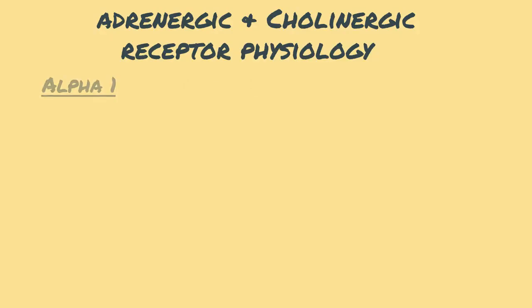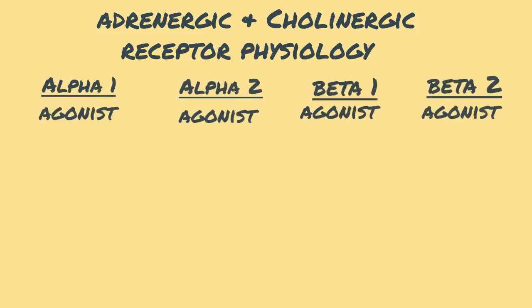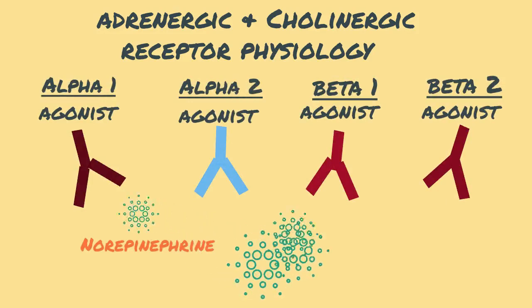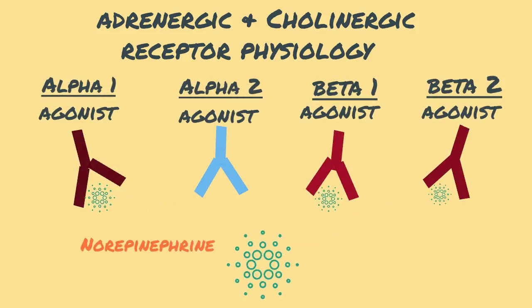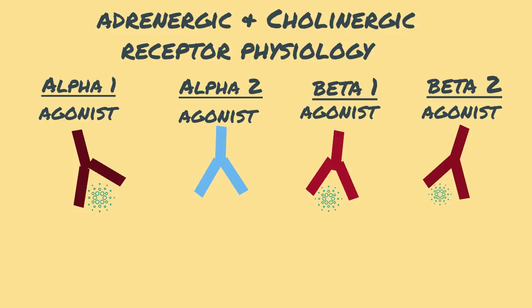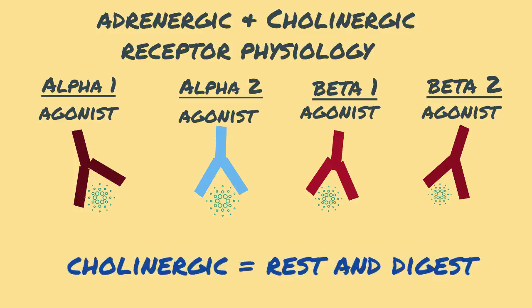Let's review the response of each receptor site when in an agonist state. When norepinephrine binds with alpha-1, beta-1, or beta-2, an adrenergic or fight-or-flight response will occur. However, if norepinephrine binds with the alpha-2 receptor sites, a cholinergic or rest-and-digest response occurs.